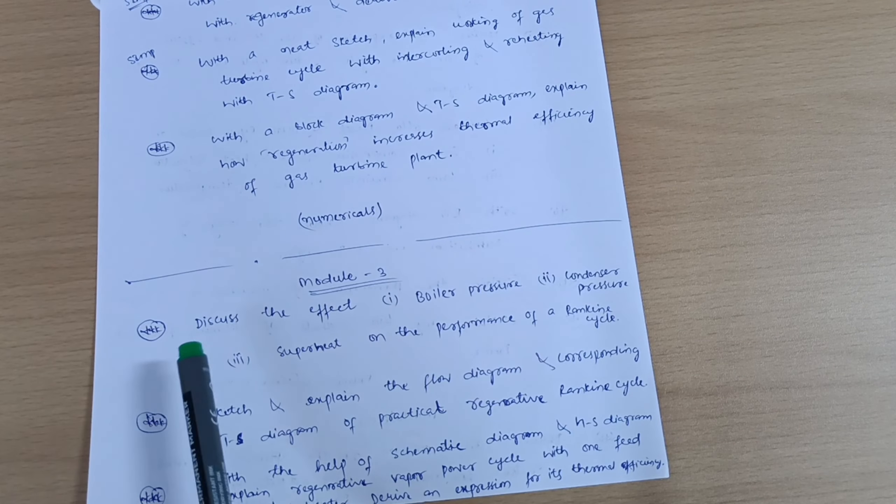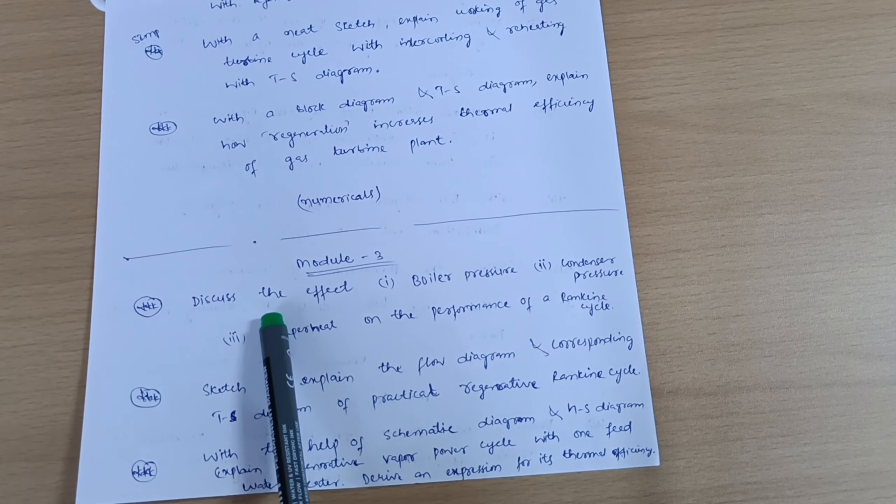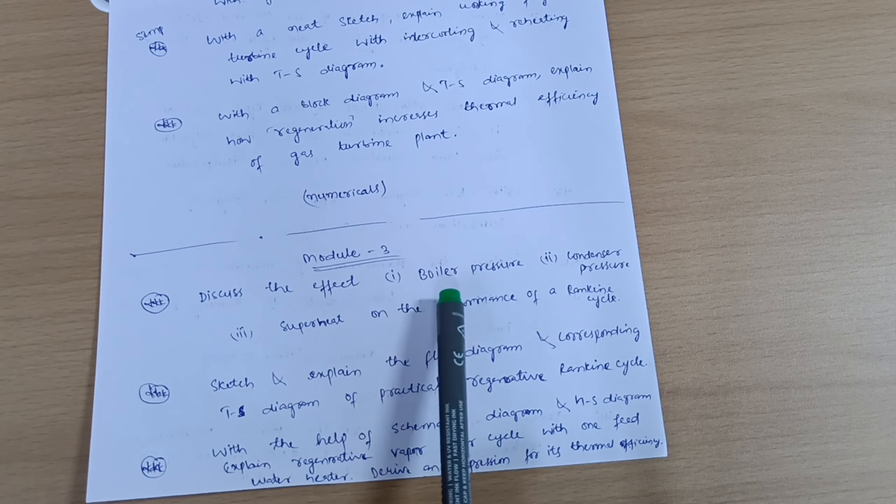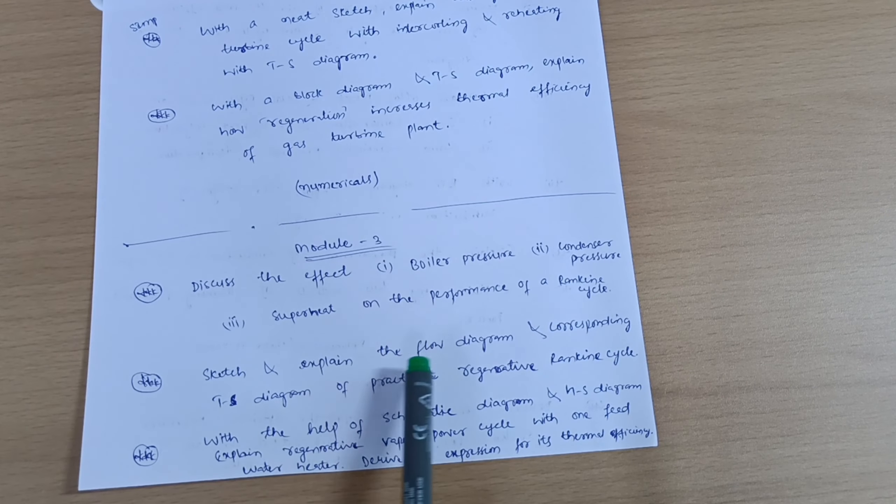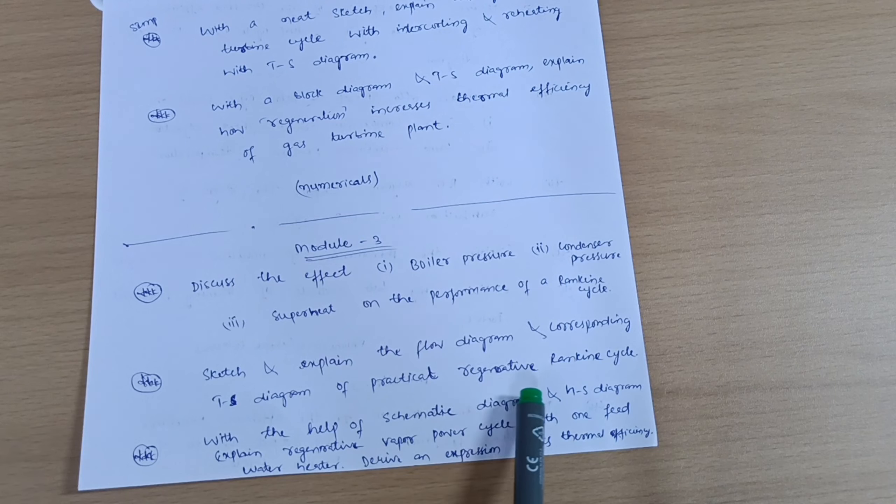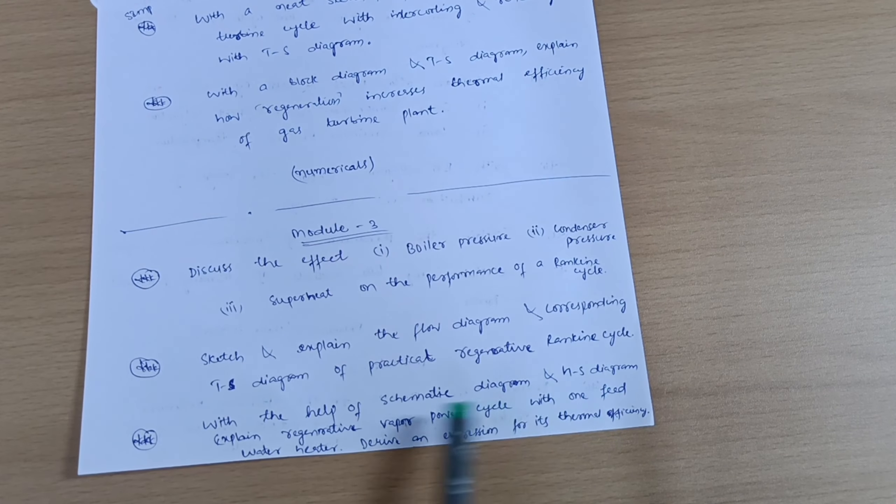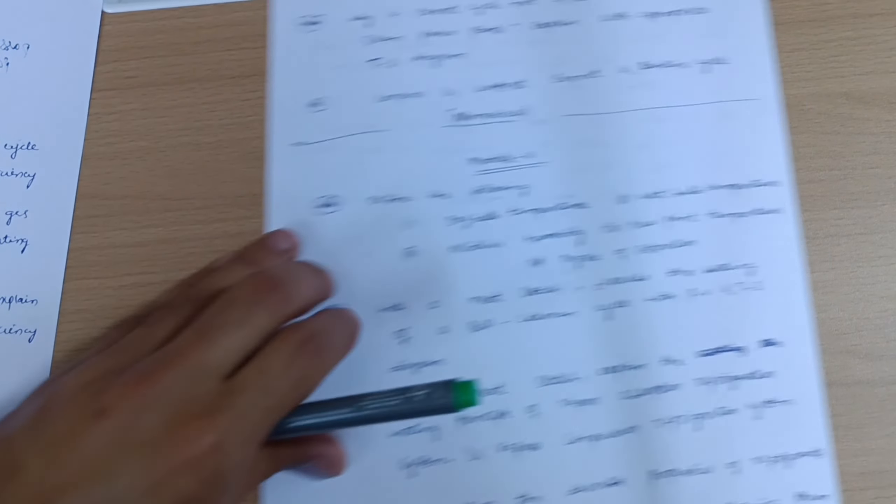Next is Module 3. Discuss the effect - this is the super important one - discuss the effect of boiler pressure, condenser pressure, and superheat on the performance of a Rankine cycle. Next, sketch and explain the flow diagram and corresponding TS diagram of practical regenerative Rankine cycle. With the help of systematic diagram and HS diagram, explain regenerative vapor power cycle with one feedwater heater. Derive an expression for its thermal efficiency.